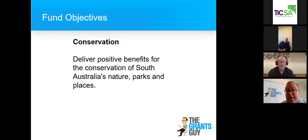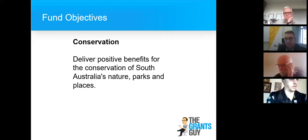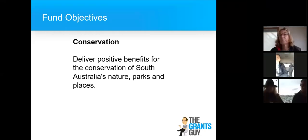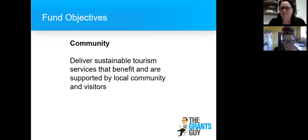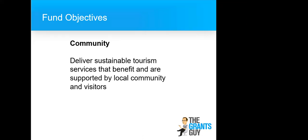The fund objectives: number one is conservation — deliver positive benefits for the conservation of South Australia's nature, parks and places. What I've synopsized in these slides are focal points I would address if I was writing this grant application, not just ticking the box but understanding the identifiables that need to be achieved. Number two is community — deliver sustainable tourism services that benefit and are supported by local community and visitors. Grants are about keywords, and I'll touch on that as we move forward.